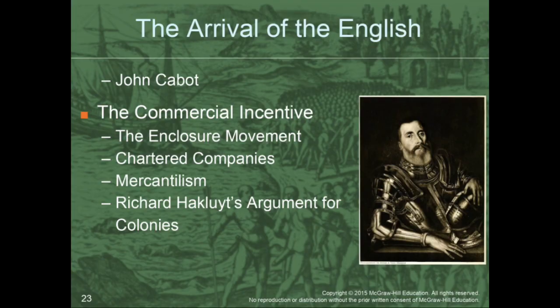That brings us to our third section: the arrival of the English. John Cabot is in a lot of ways the Christopher Columbus of England — he did an exploratory venture on behalf of the English monarchy to see what colonial opportunities existed in the Americas. To give you a little context of what was going on in England, they were going through something known as the Enclosure Movement, which basically meant that a lot of land in England that was previously free and open for farming now had the English government portioning it off and selling it to people who could afford to buy it.